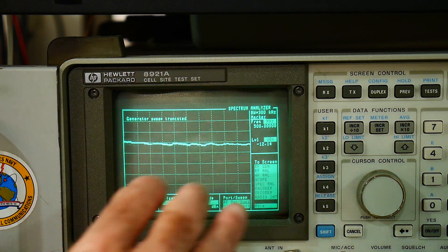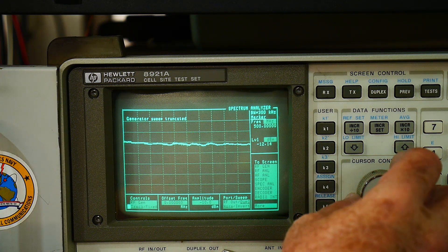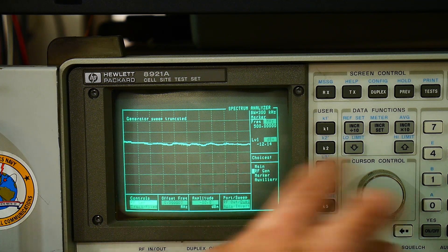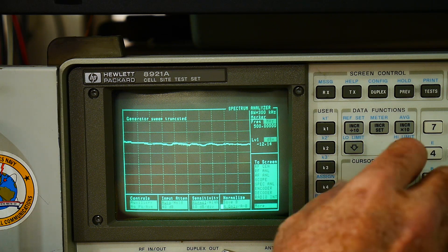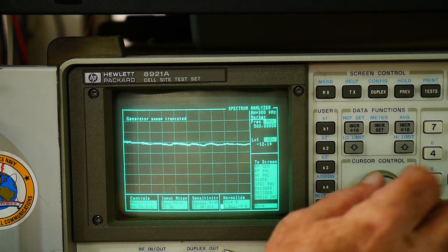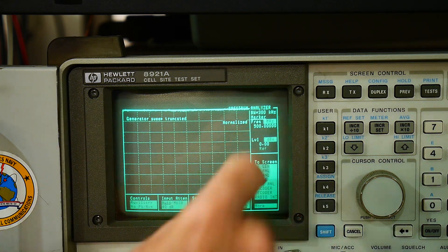So we want to normalize this thing, have a nice flat response. We'll go here to RF gen, go to auxiliary. There's a normalize function over here. We'll say save, and then A minus B. And now it's normalized. So the trace is nice and flat up at the top.